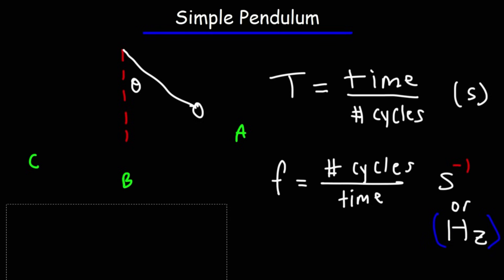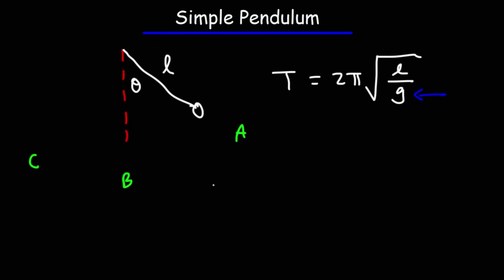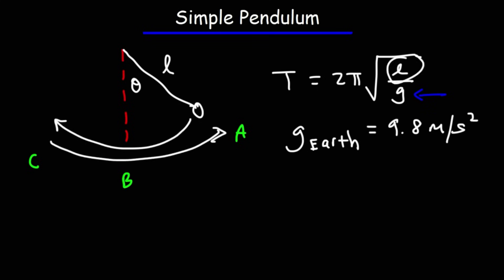There are some additional formulas to add to your list. L is the length of the pendulum, and the period depends on it. The period is equal to 2π times the square root of the length of the pendulum divided by the gravitational acceleration G. G is the gravitational acceleration of the planet — for Earth, G is 9.8 meters per second squared.